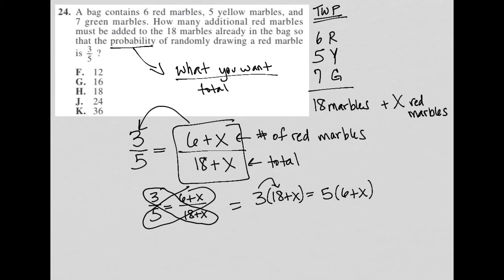When I simplify that by distributing the coefficient in front of each set of parentheses, I get three times 18, which is 54 plus three X, equals 30 plus five X.